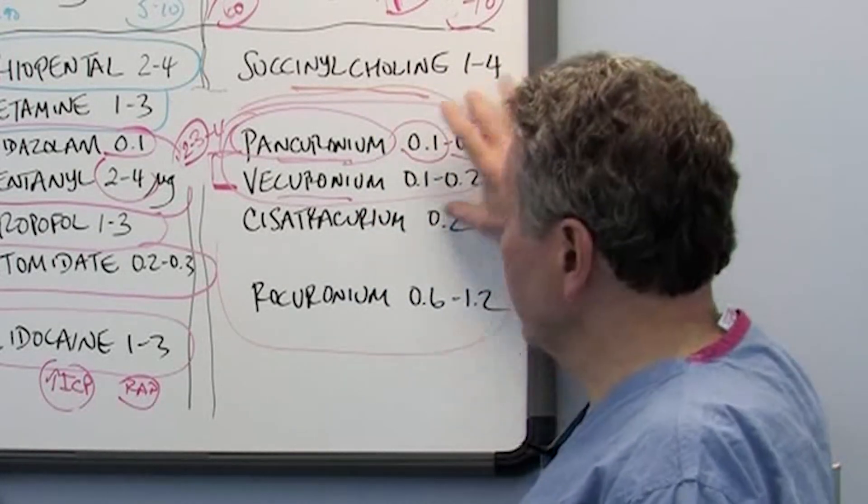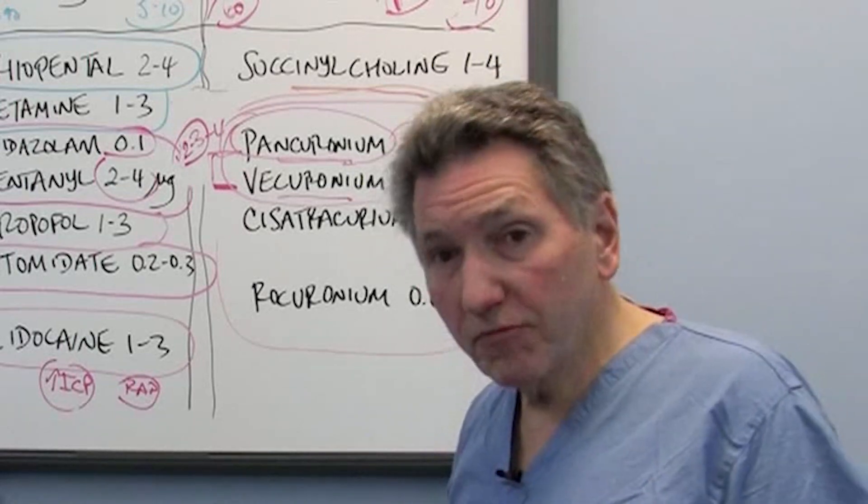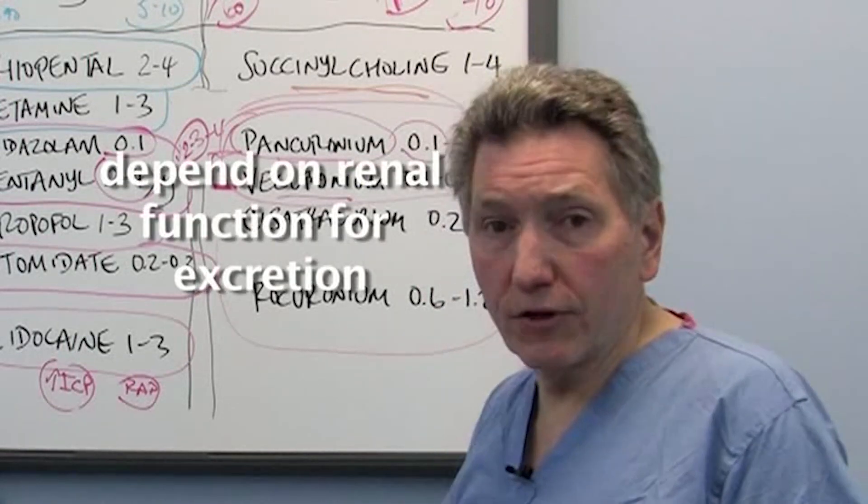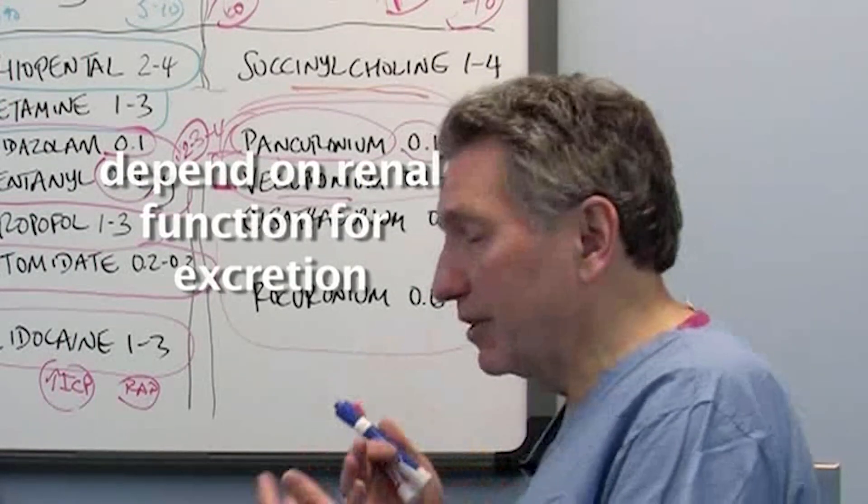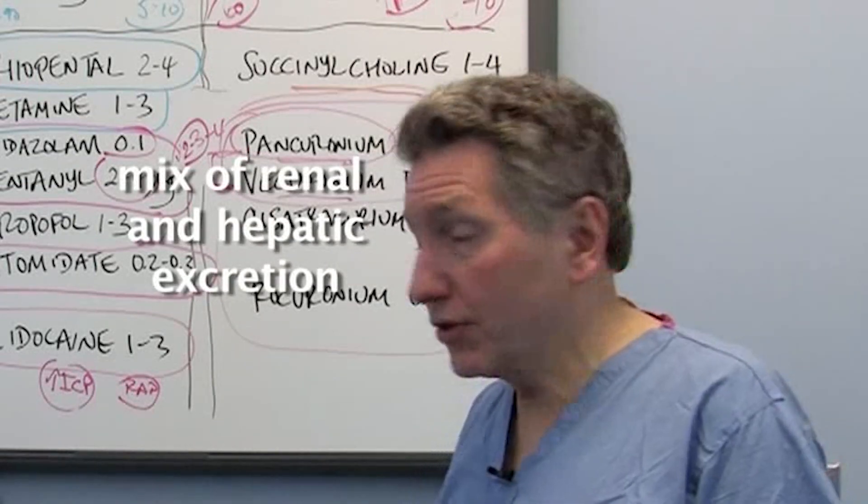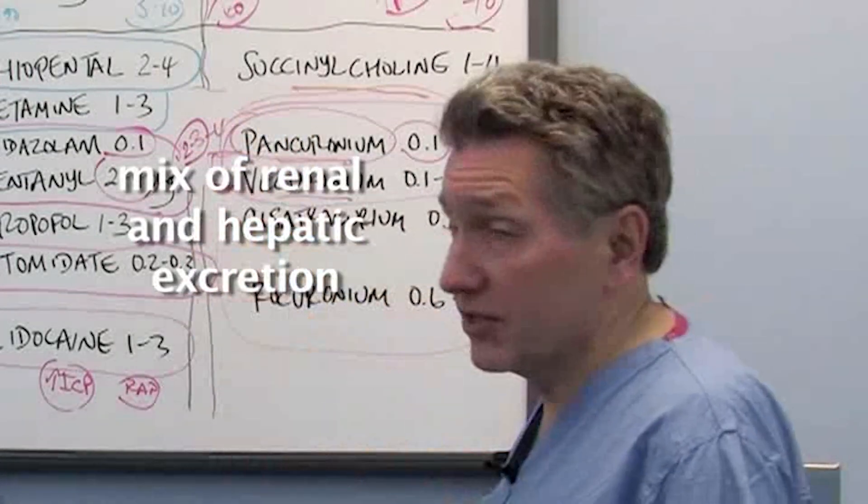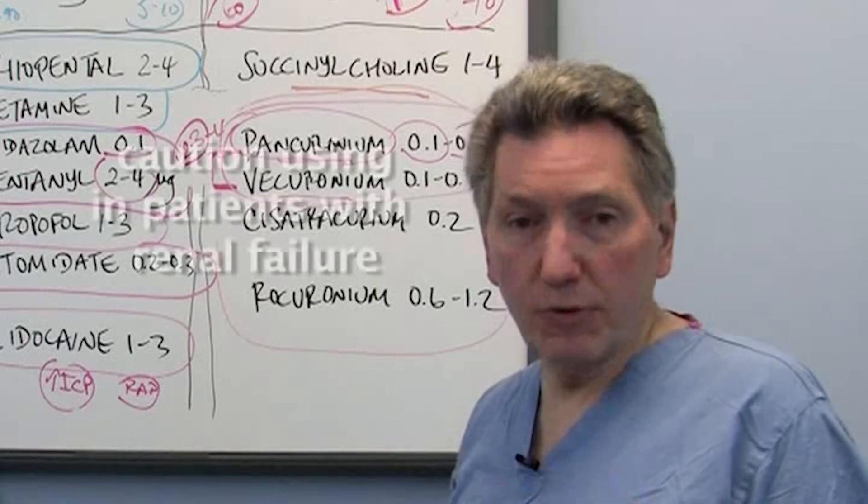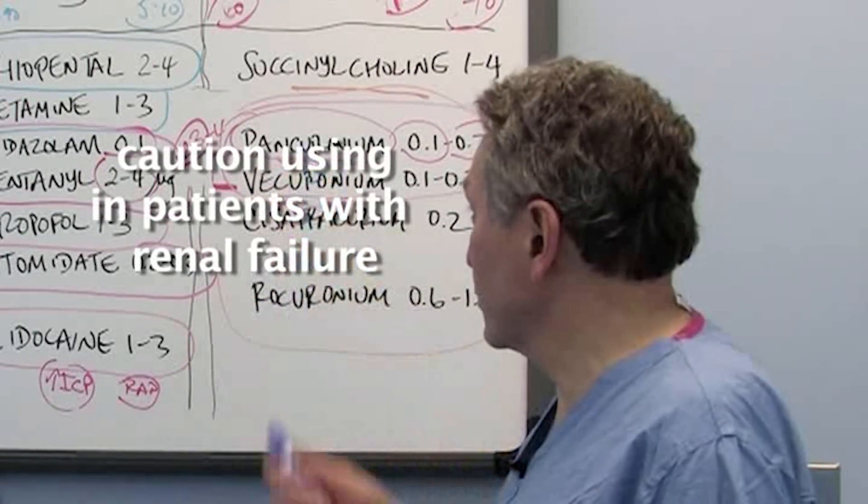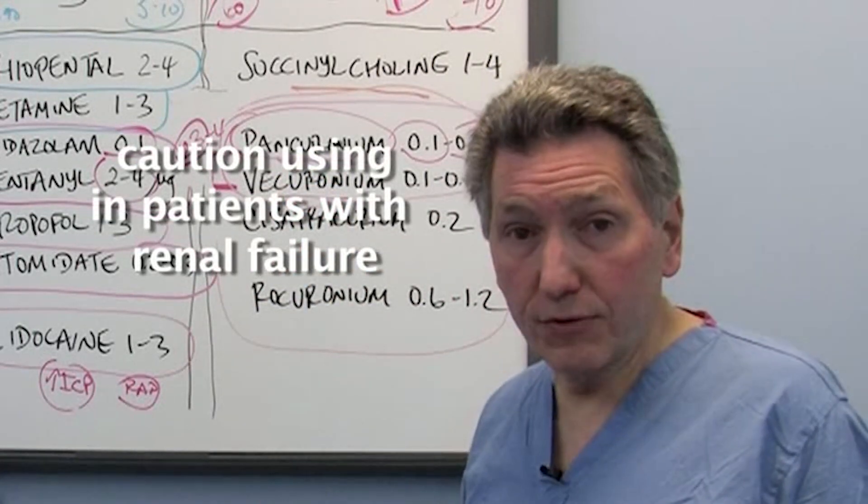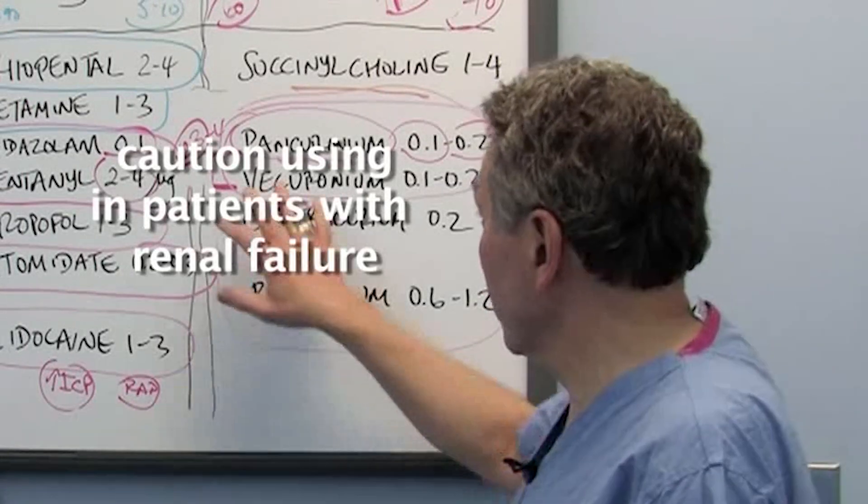The downside of these drugs, that really is the only downside, is that they are fairly heavily dependent on renal function for excretion. There's a mix of renal and hepatic excretion, but it's pretty heavily renally based, so that if you have someone in renal failure, then you might not want to use Pancuronium and Vecuronium, or you might not want to use multiple doses of the drug. You might be able to get away with one dose.